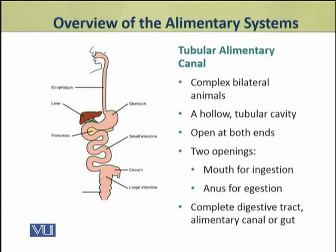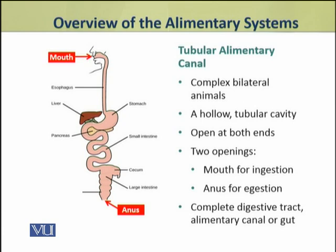The tubular alimentary canal is found in complex bilateral animals. This tube is a hollow tubular cavity open at both ends — it is not sac-like. The first opening is called the mouth, which is for ingestion and intake of food, and the other end is called the anus, which is for egestion. This type of tubular digestive tract is called a complete digestive tract, or alimentary canal, or gut.